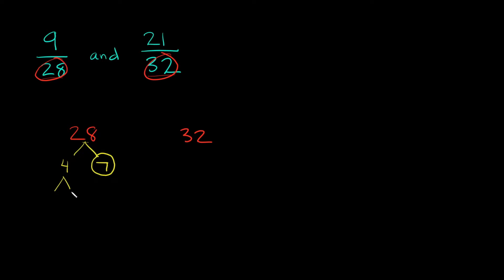What two numbers can we multiply together to get 4? Well I could multiply 2 times 2. Now do I have any prime numbers? Yes — 2 is a prime number, so I'm going to circle both of them. I have no composite numbers left, there's nothing left to break down, so I'm done here.